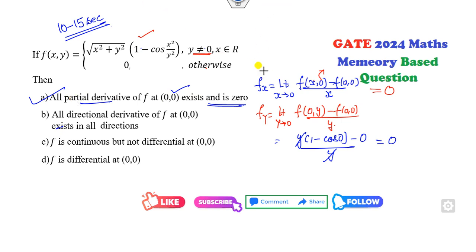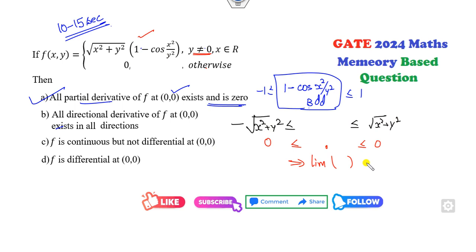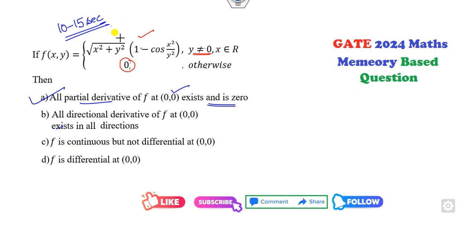Now how can you check about the continuity? Firstly, clearly say (1 - cos(x²/y²)) is a bounded function. It lies between -1 to +1. If I take this (x² + y²) and multiply on both sides, now take the limit as (x,y) both approach 0. This value will be 0, this value will be 0. What does it mean? Limit of given function is 0, which is same as f(0,0). Yes, it is continuous. Otherwise, what is the shortcut trick? As I told you, whenever the degree of the numerator is greater than the degree of the denominator, the answer will always be 0 at the point 0. The degree of denominator is 1 because this is a bounded function, so this value goes to 0.